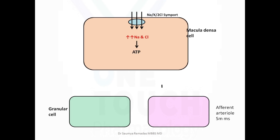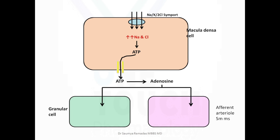Swelling causes an increase in ATP in the macula densa cell. This ATP escapes through the basolateral membrane and is subsequently converted to adenosine. Adenosine inhibits renin secretion from the granular cell and increases calcium in the efferent arteriolar smooth muscle, causing contraction of the efferent arteriole. The inhibition of renin secretion and contraction of the efferent arteriole together decrease the glomerular filtration rate.